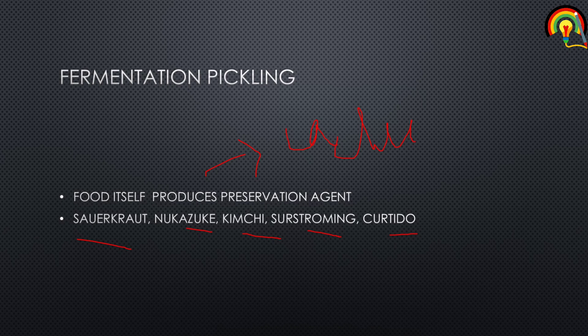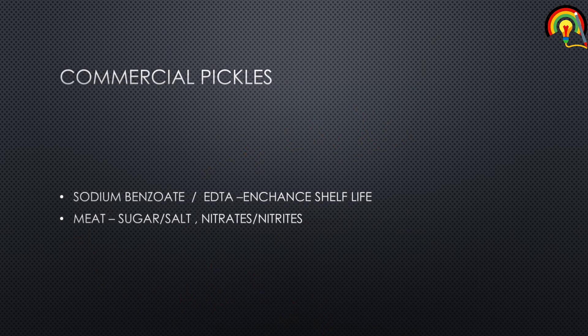You might get a question about which pickling process a food follows. For example, sauerkraut follows fermentation of cabbage. The next type is commercial pickles.